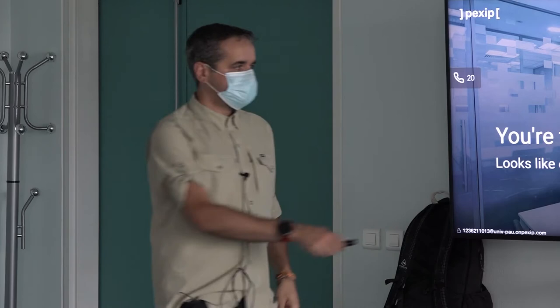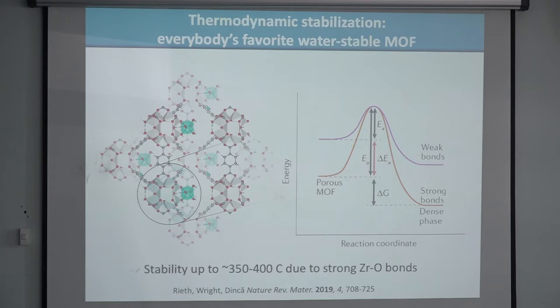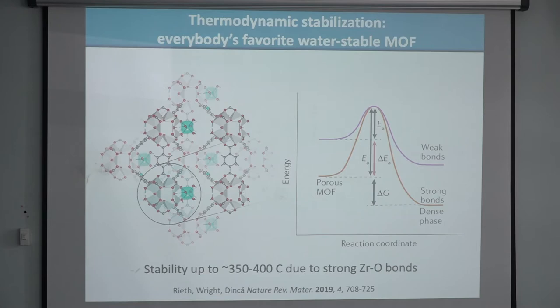Another way to increase the height of the barrier is to go to strong bonds like zirconium-oxygen bonds — a lot of people like to work with zirconium-oxygen MOFs because they're thermodynamically stable. With a zinc-oxygen bond, both the porous phase and the dense phase are unstable. With zirconium, both phases are more stable, which means given the same transition state, the kinetic barrier is higher. So if you think about simple kinetics and thermodynamics, you can make very stable MOFs.